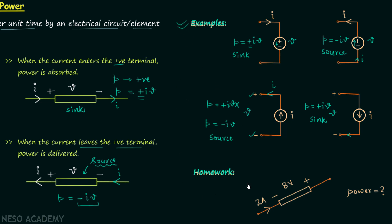For the homework problem, we have one element with a potential difference of 8 volts. The current of 2 amperes is entering the negative terminal. Your task is to calculate the power with the proper sign and determine whether the element is acting as a source or sink.